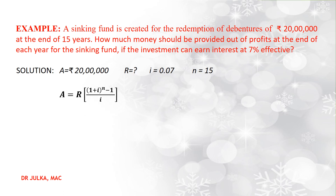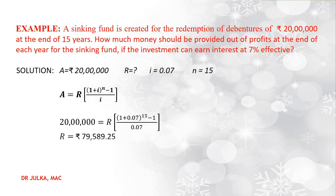Here we use the formula of ordinary annuity where A equals r multiplied by [(1 + i)^n − 1] divided by i. Substituting A = Rs 20 lakh, i = 0.07, and n = 15, after calculation we get the value of r = Rs 79,589.25.